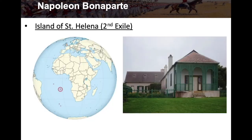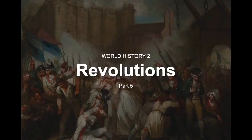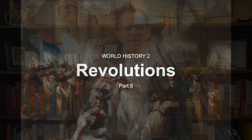Napoleon was exiled to Saint Helena — his second exile, much farther away than the first. Elba was off the coast of Italy, but Saint Helena is an island in the Atlantic well off the coast of Africa. Here's his house, which still stands today. That's where he lived in exile and where he died.